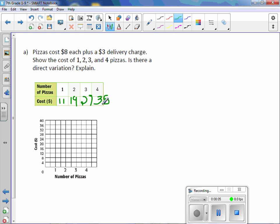So let's graph this here. At 1 pizza, it costs $11. Do the best you can. I know it's a small graph. 2 pizzas would be $19. 3 pizzas would be $27. And 4 pizzas would be $35. Draw a line as best as you can. I know it's not perfect. So here's my line.